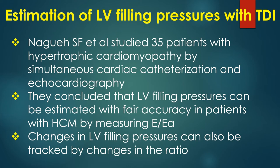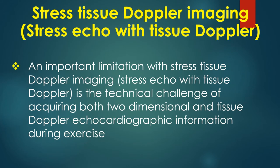Nagoje and Associates studied 35 patients with hypertrophic cardiomyopathy by simultaneous cardiac catheterization and echocardiography. They concluded that LV filling pressures can be estimated with fair accuracy in patients with HCM by measuring E by EA. Changes in LV filling pressures can also be tracked by changes in this ratio.